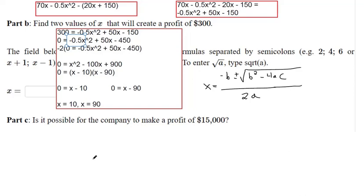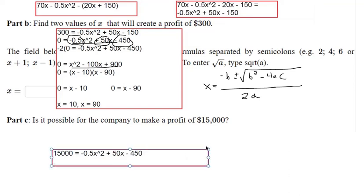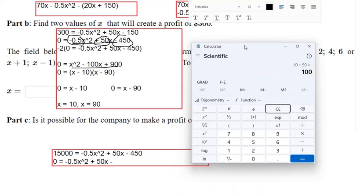And part C, is it possible for the company to make a profit of $15,000? What you'd want to do is plug in $15,000 instead of $300 like I did up above. So $15,000 is our profit. And then this one, I think we're going to have to use the quadratic formula. So I'd subtract that $15,000 from both sides. So you're going to get to see me do the quadratic formula here. Negative 450 subtracted by $15,000. That's negative $15,450.